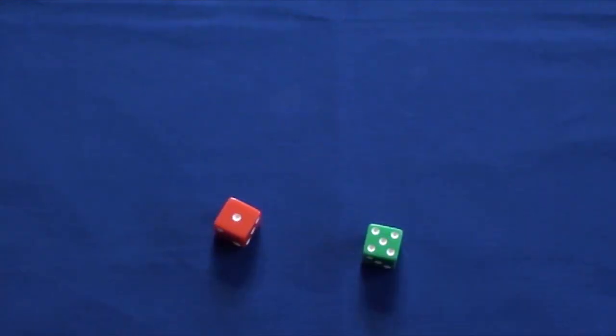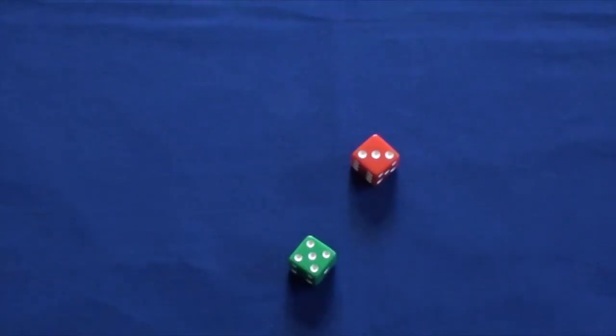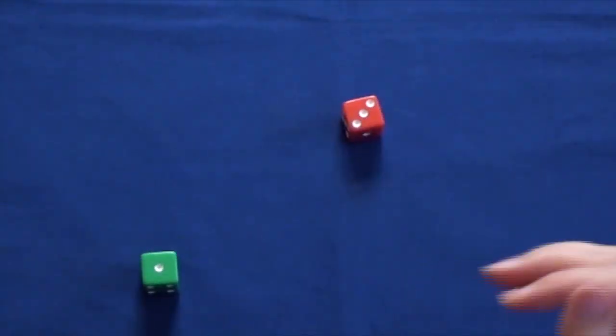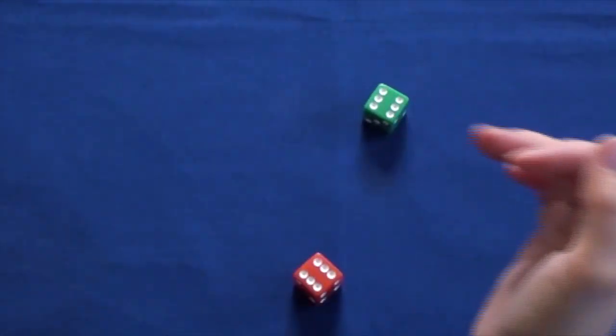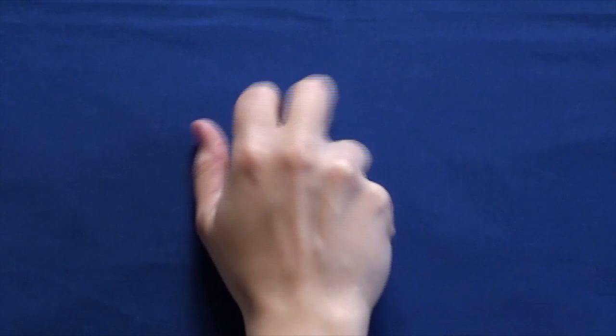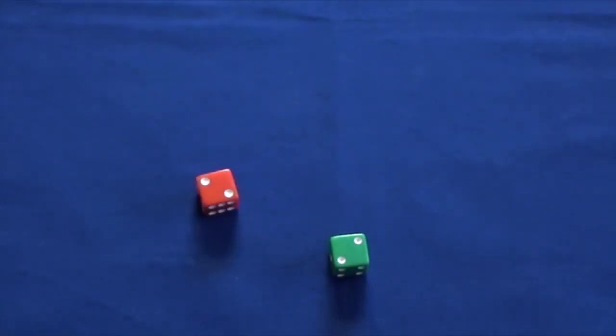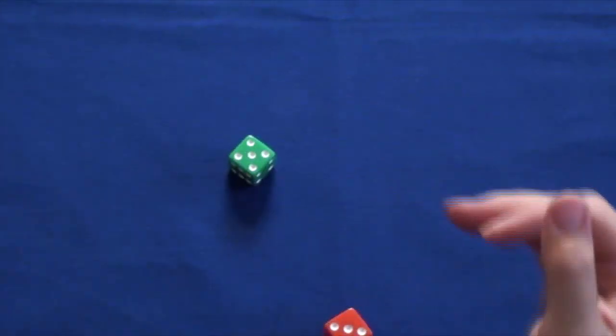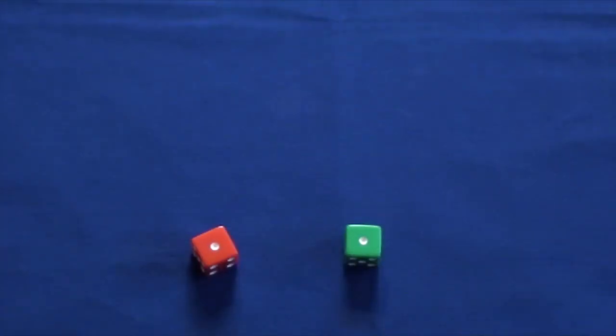Doubles are often treated special when playing games. Some board games allow you to roll again when you roll doubles. Double sixes. That's twelve. Double twos. That's four. Double ones. They're also called snake eyes.